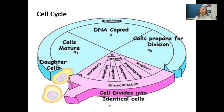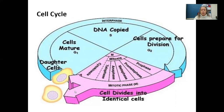Here is a visual you will see on your quiz and your test. We have the cell cycle diagram showing interphase as the biggest phase since that's where the cell spends most of its time. In G1, the cell is maturing and growing; in S phase, there's copying of that DNA; in G2, the cells are preparing for division. Then they go into mitosis before going back into G1 as an identical cell.